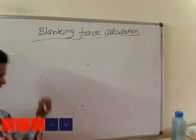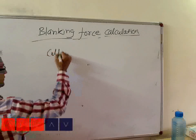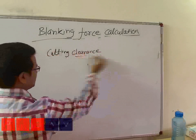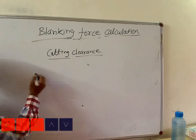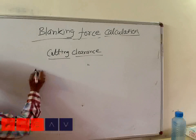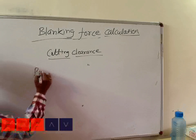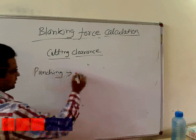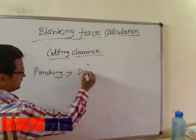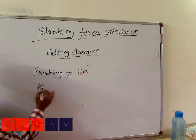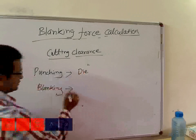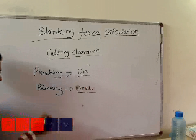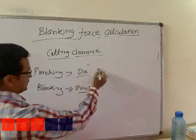Here is something about cutting clearance. As we discussed in our first lecture, if a punching operation is there, then the clearances have to be given on the die. If the blanking operation is there, the clearances have to be given on the punch.